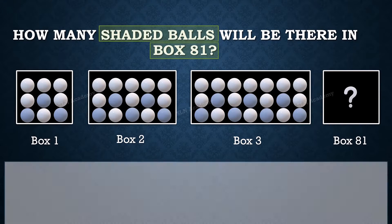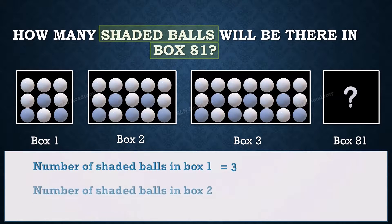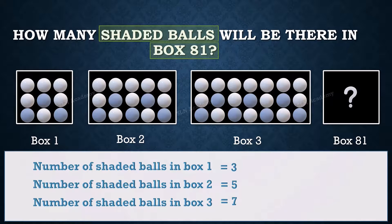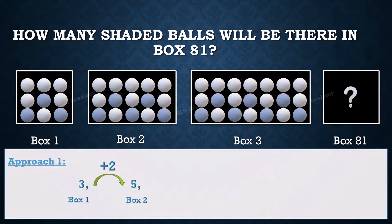Number of shaded balls in box 1 is 3, in box 2 is 5, in box 3 is 7. Let us see how to solve this if it is asked for an immediate box such as box 4. It seems there is a pattern of plus 2, so for box number 4, it will be 9.